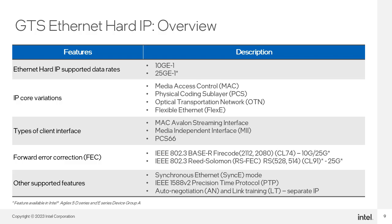The Ethernet Hard IP configuration supports 10G and 25G Ethernet. 25G Ethernet is also supported in Agilex 5 D series and E series Group A devices. The IP supports four core modes: full stack with the Ethernet MAC; PCS Direct with optional FEC, which bypasses the MAC to allow connection of your own 10G or 25G MAC; OTN; and FlexE. For client interfaces, the MAC uses an Avalon Streaming interface, PCS Direct uses the Ethernet standard MII, and FlexE uses a PCS-66 interface.